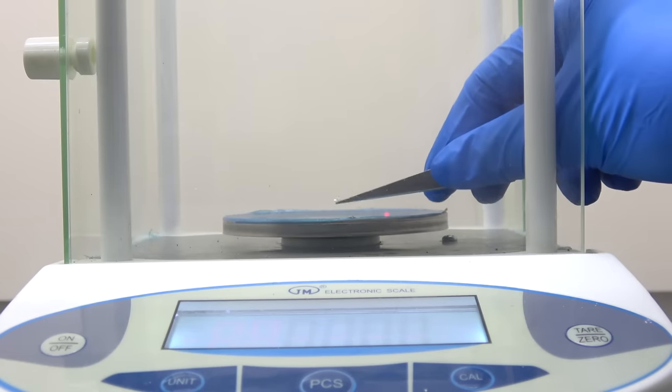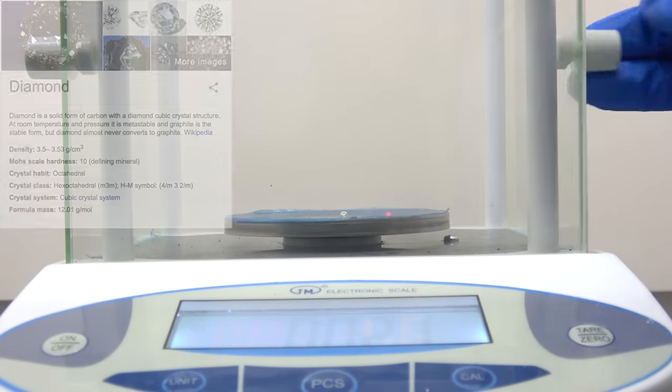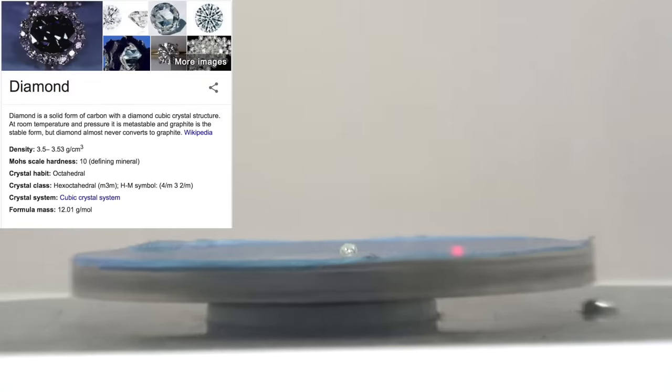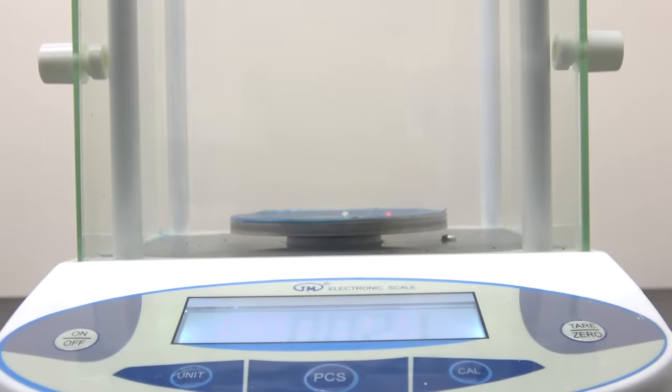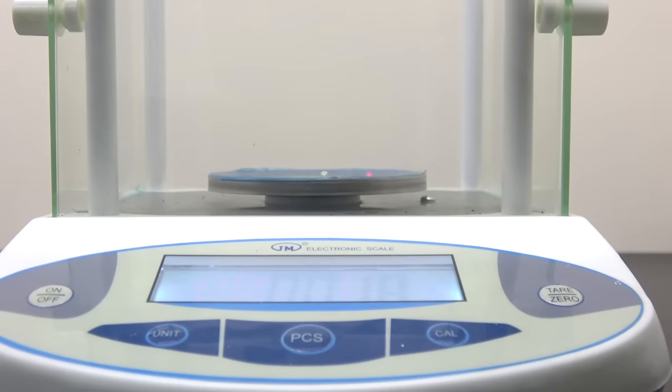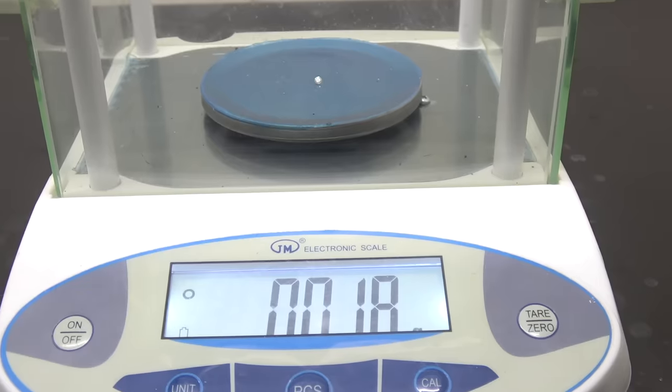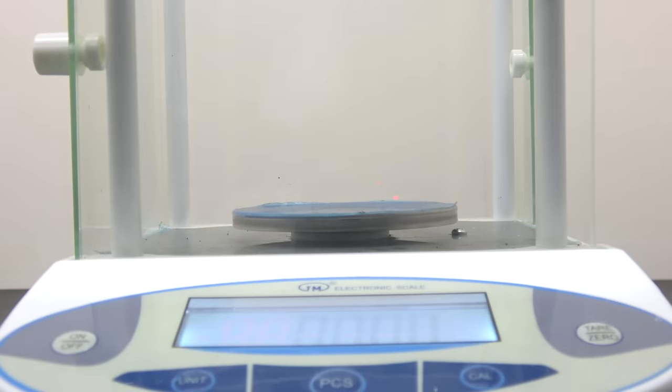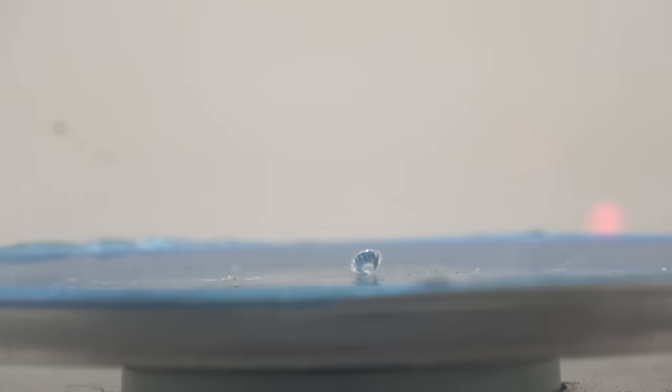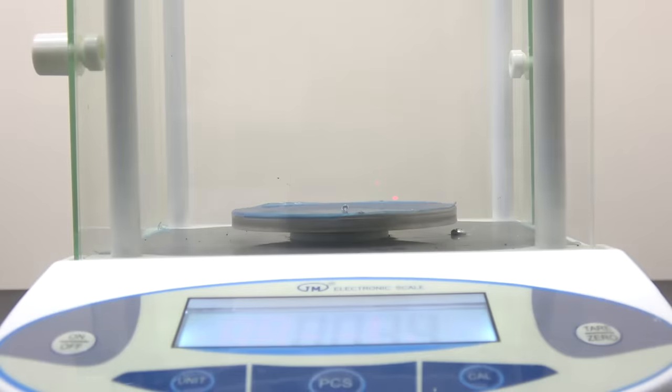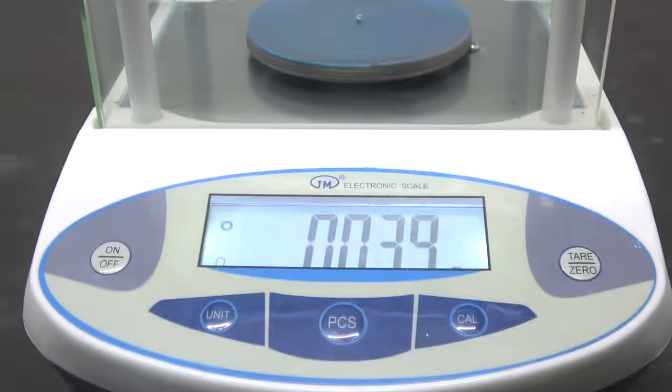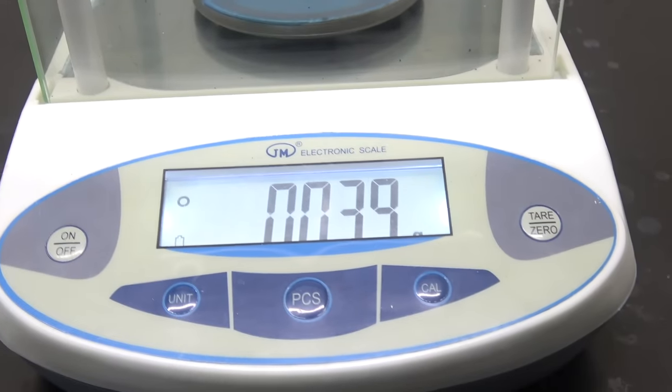Every substance has its specific density. The density of diamond is around 3.5 to 3.53 grams per cubic centimeter. Depending on the amount of impurity, it may vary a little. The reading on the scale for diamond B is 0.018 grams. Just out of curiosity, I put the fake diamond on the scale and see how much it weighs. As expected, the fake one weighs a lot more for the same size.